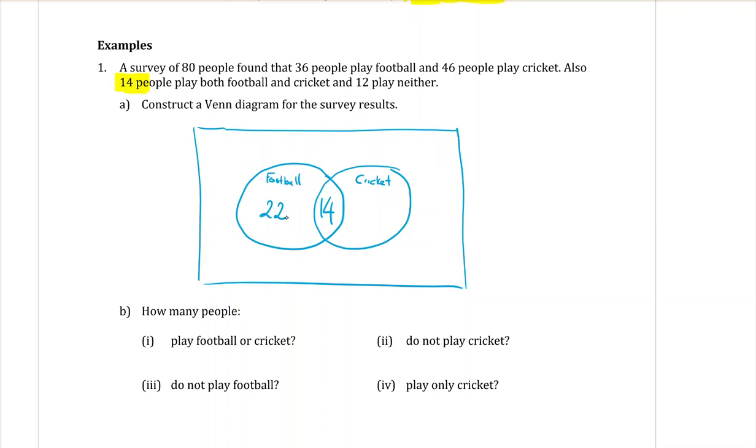Subtract off the 14 means that there's 32 people who only play cricket. And we are told that there are 12 people who play neither. You normally put that number in the bottom right-hand corner.